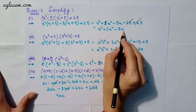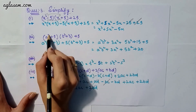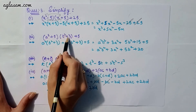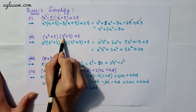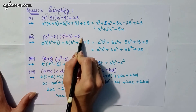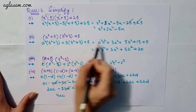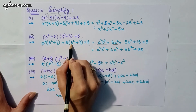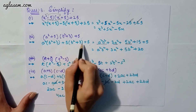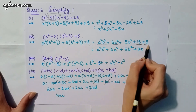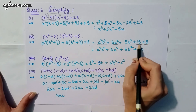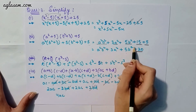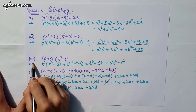Moving to the second part: (a² + 5)(b² + 3) + 5. a² will be multiplied by (b² + 3) and plus 5 will be multiplied by (b² + 3), then add 5. By solving this we get a²b² + 3a² + 5b² + 15 + 5, which simplifies to a²b² + 3a² + 5b² + 20.